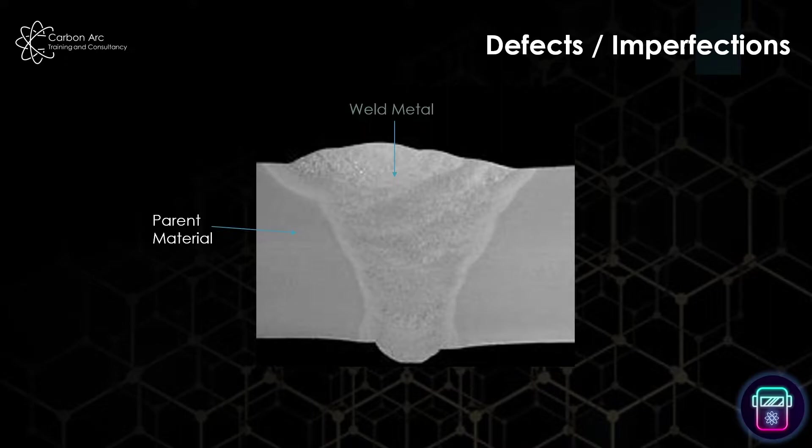Here we have the weld metal. We can see the parent material and we can identify the heat affected zone. So this is the part of the material which was heated above its critical transformation temperature, normally around 720-723 degrees. It goes through a physical change so it looks different in a macro, but we can't see what that change is because we're not doing a microscopic examination.